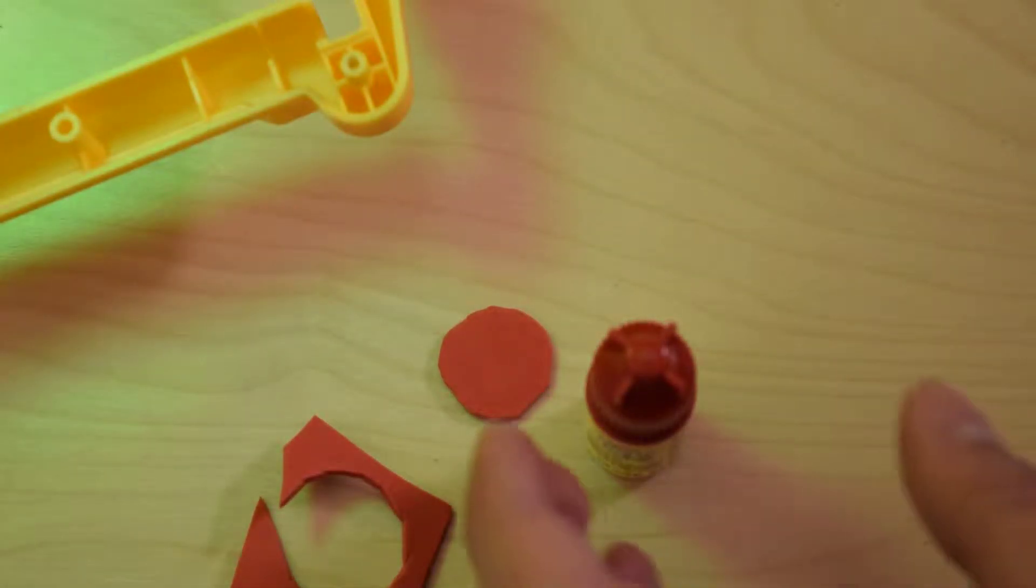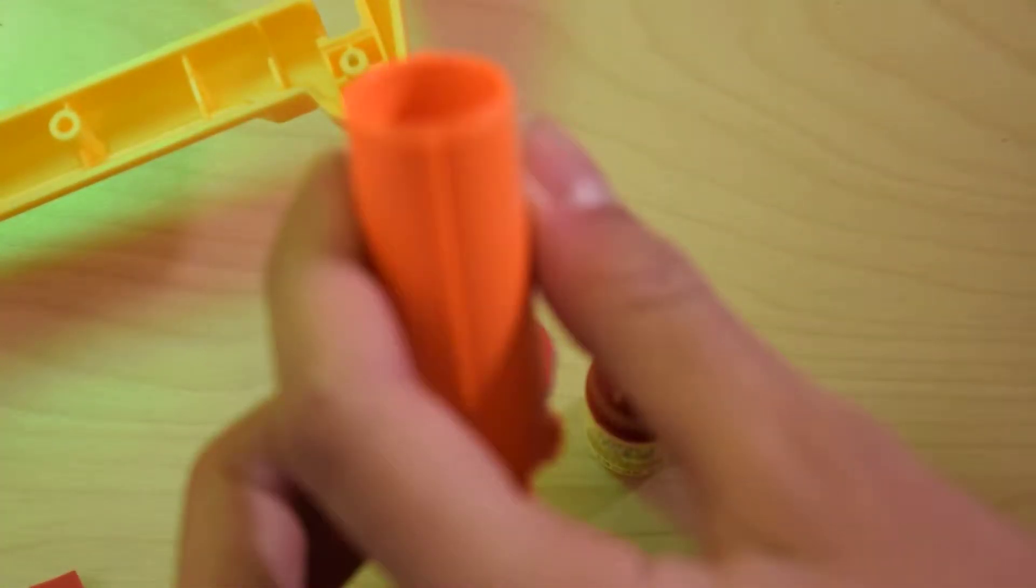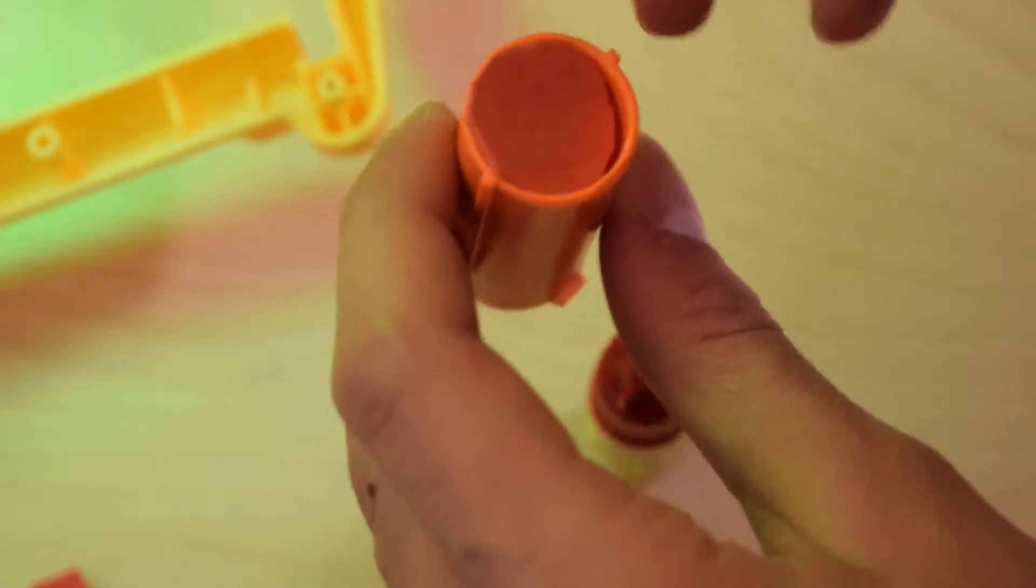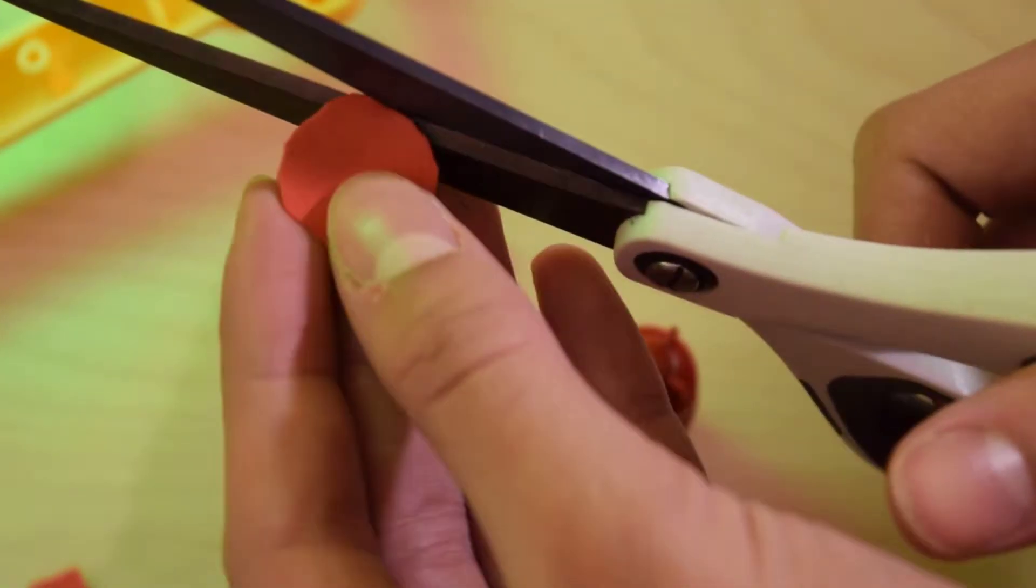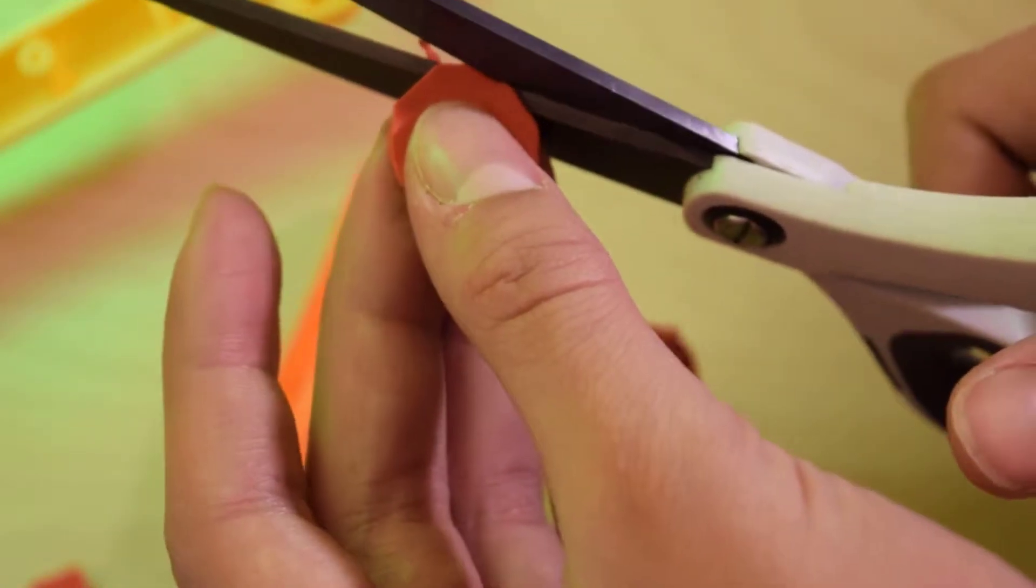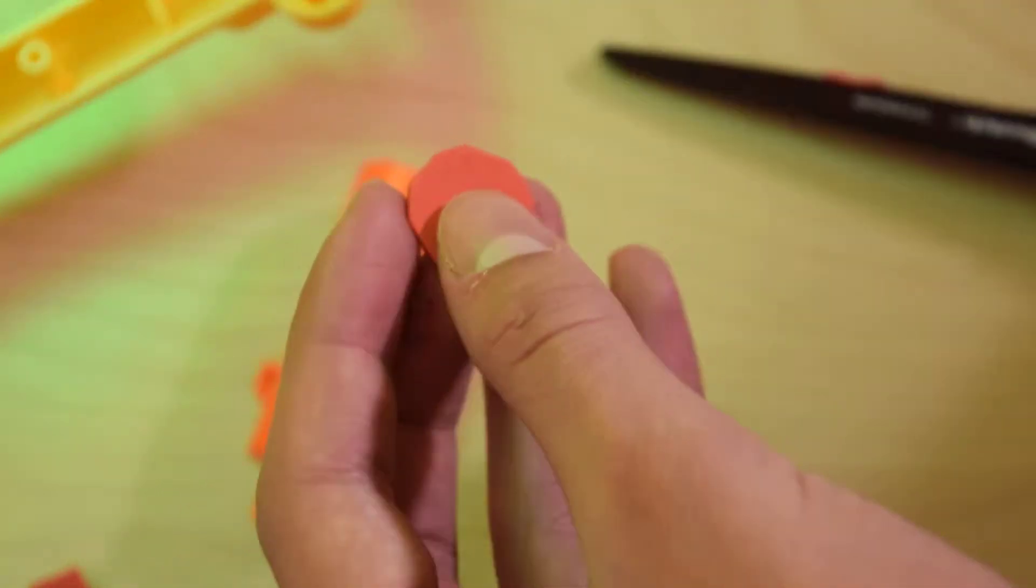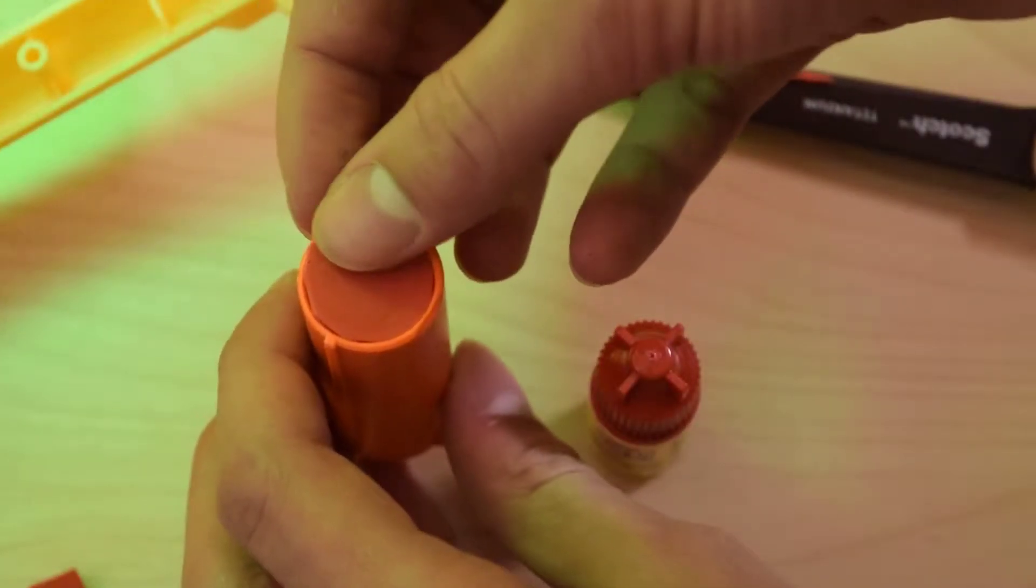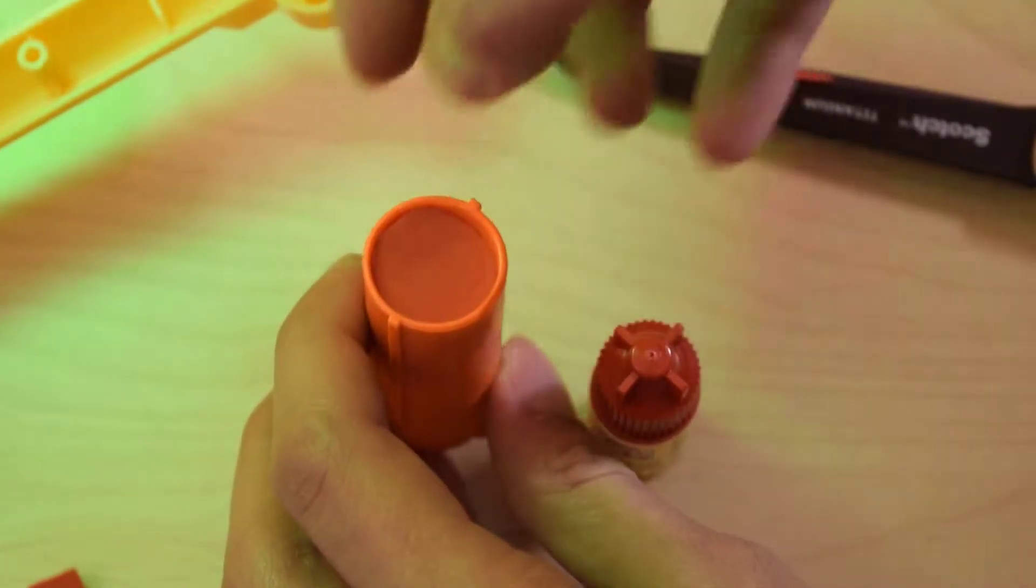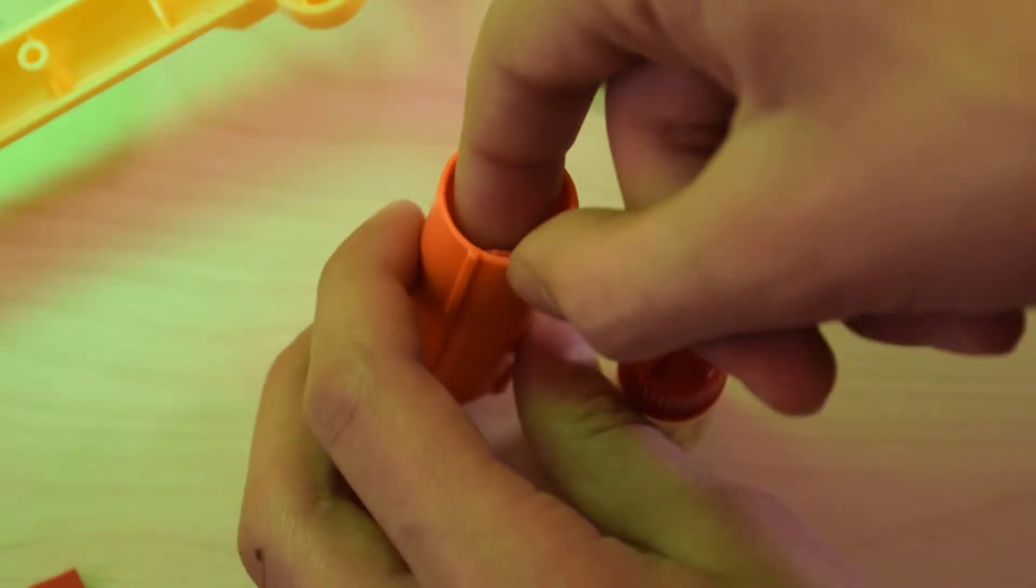Once you've cut out the circle of foam, we need to glue it down into the bottom of this other end. So just test fit the foam to make sure it fits. And I cut mine a little bit too big, so if it's too big, simply trim the edges. Test fit again. And it fits.